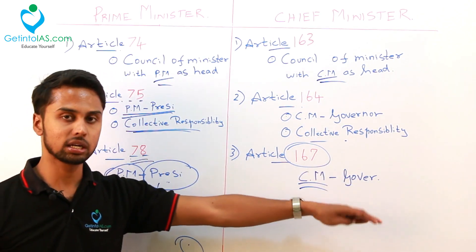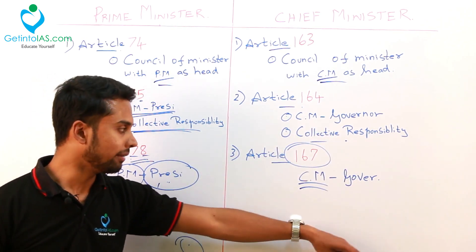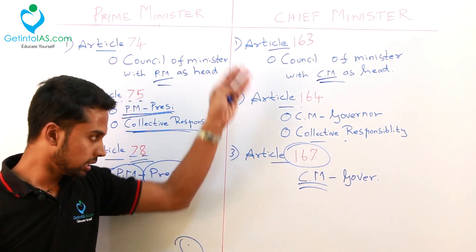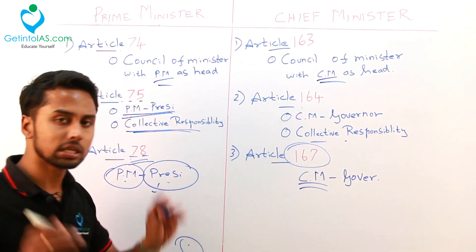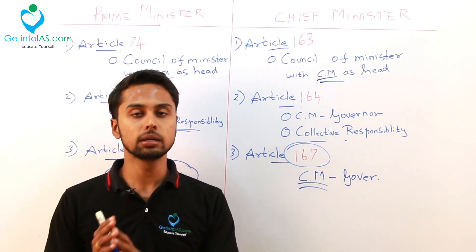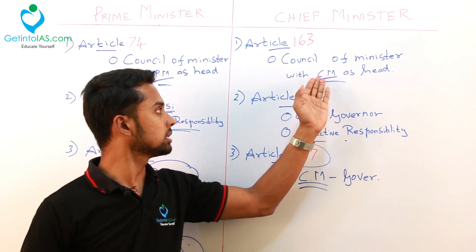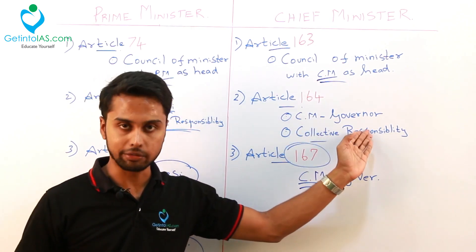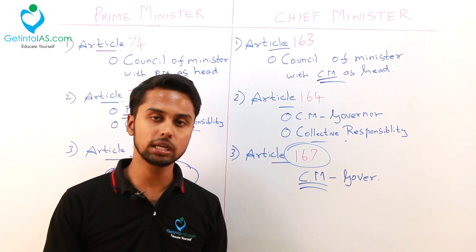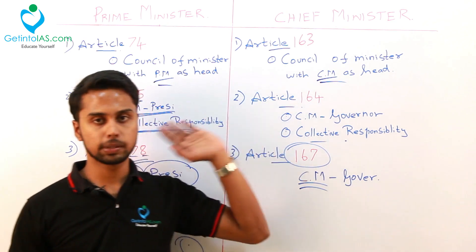Whenever a decision is taken at the council level, that will be communicated to the governor via the chief minister. Your prime minister is appointed by the president, and your chief minister is appointed by the governor. The party which has majority, that party's leader is appointed as the chief minister or the respective prime minister.